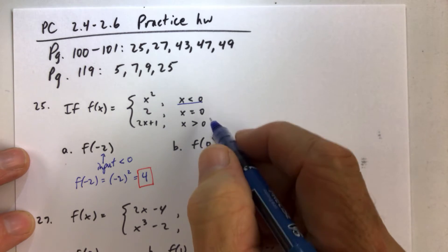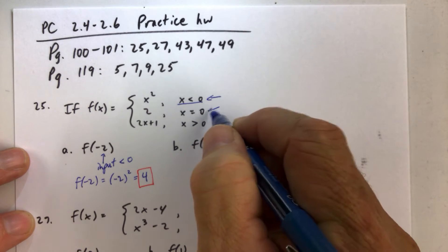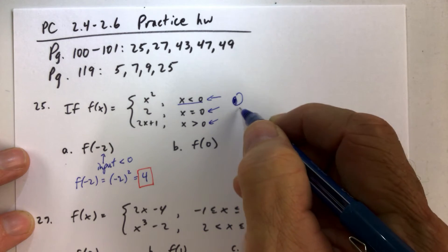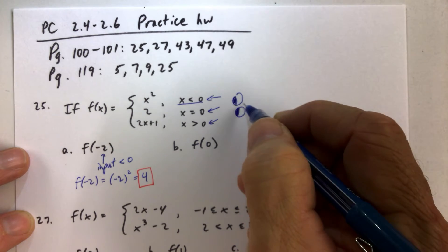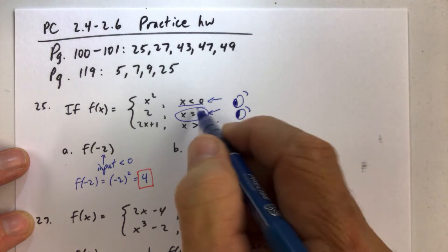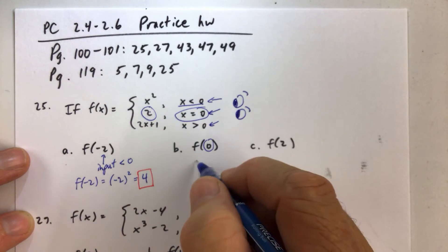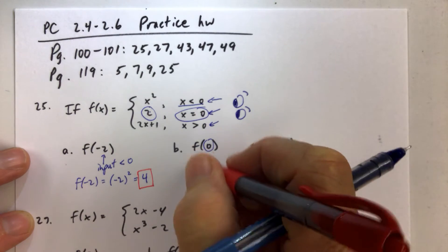If the input is 0, we just look here, here, and here. When is the input equal to 0? Or what piece do we use if the input is 0? Well, this is the input being 0. That's a 0. So the output is 2. So f of 0 has a value of 2.